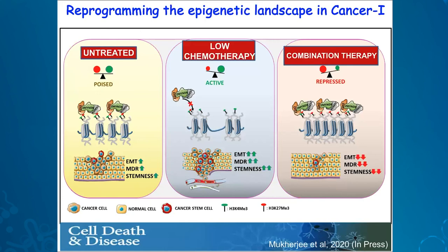To summarize: we talk about a poised epigenomic state where K4 and K27 trimethylation modifications are in a perfectly balanced model, with modest expression of EMT, MDR, and stemness genes. A low-dose chemotherapeutic strategy turns on these genes because the balance is tilted towards the activation state. Our epigenetic regulator, ZMYND8, is able to restore this situation by turning off EMT, MDR, and stemness genes and restoring their repression landscape.